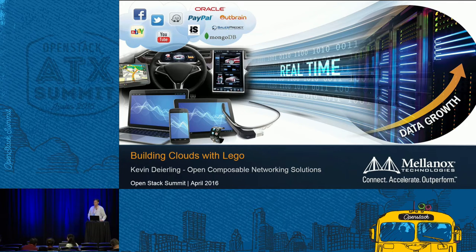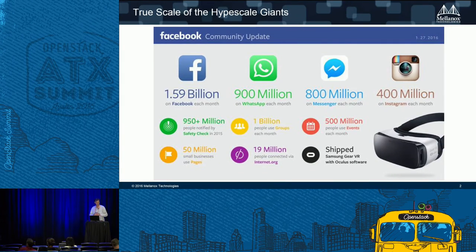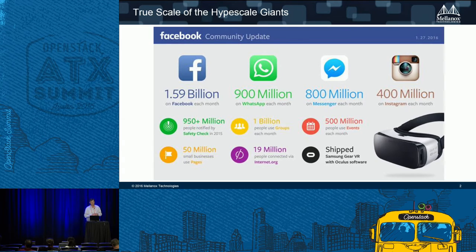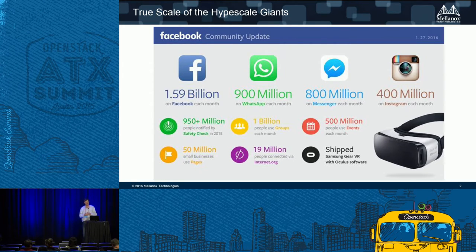I'm Kevin Deerling with Mellanox Technologies and I'm here to talk about building clouds with Lego, applying Lego principles to OpenStack clouds with what we call open composable networks. Many people may know Mellanox as the InfiniBand company — that's where we started about 16 years ago. We are the dominant supplier of InfiniBand connectivity for high-performance computing, but more recently we've launched into the Ethernet space and sell a lot more Ethernet today. Four out of the top five hyperscale data centers in the world are our customers.